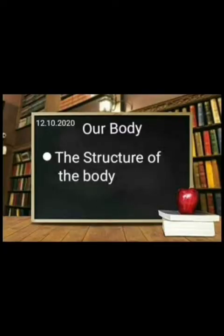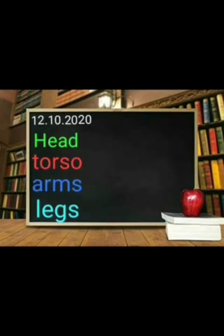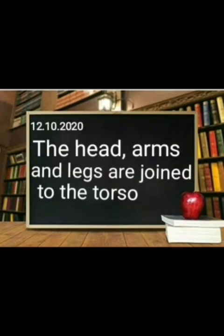Children, let us learn about the structure of the body. The head, torso, arms and legs are the main parts of the body. The head, arms and legs are joined to the torso.